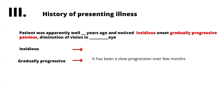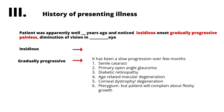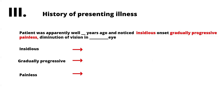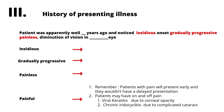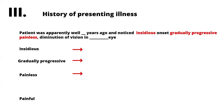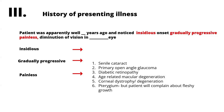Gradually progressive loss of vision that is slow over a few months — possible causes include senile cataract, primary open angle glaucoma, diabetic retinopathy, age-related macular degeneration, corneal dystrophies or degeneration, and pterygium. You also need to ask whether the diminution of vision is painless or painful. If painless, the same conditions apply: senile cataract, primary open angle glaucoma, diabetic retinopathy, age-related macular degeneration, dystrophies, or pterygium.